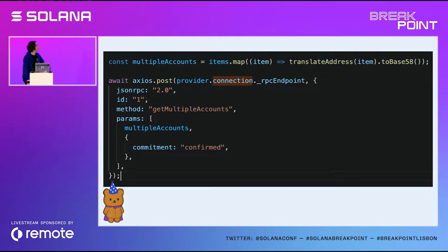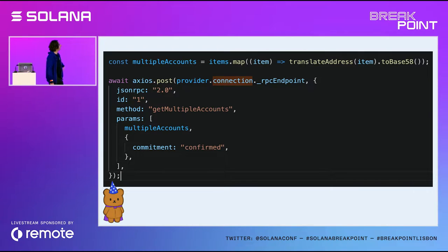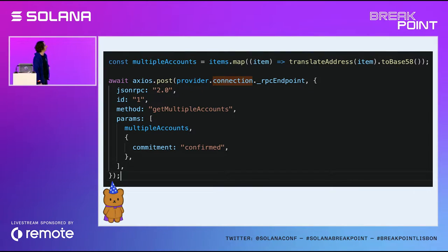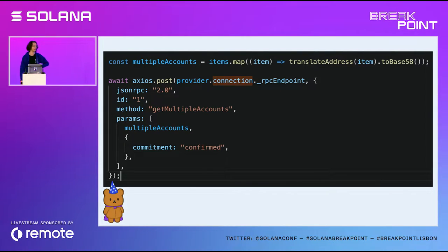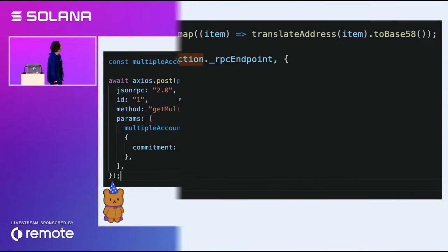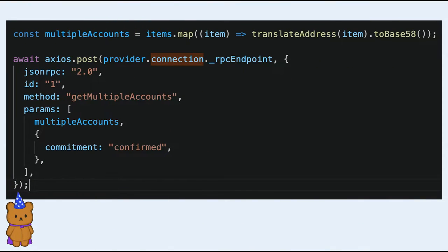Here's an example of how you'd do it in an RPC call normally. I primarily use RPC endpoints rather than the Web3 library in our codebase. Each time, you have to send the commitment level as a parameter — otherwise it will default to finalized.